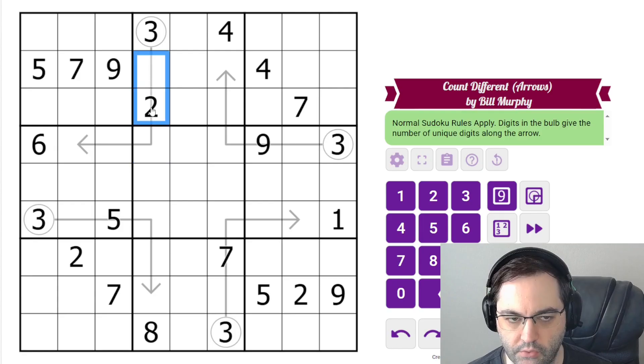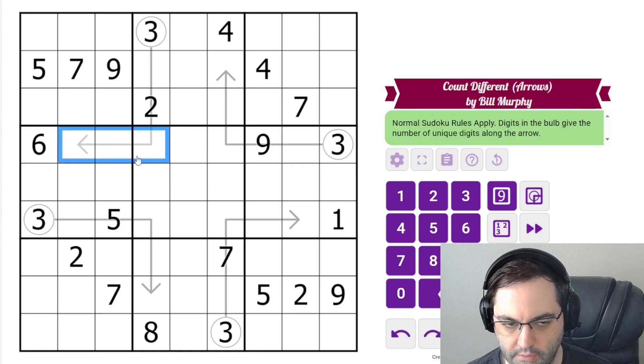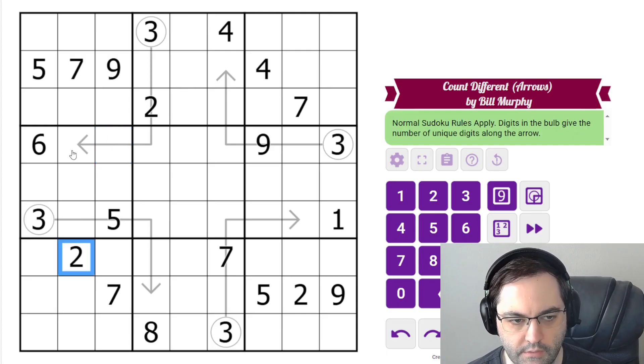So we can use that to place some digits immediately. We know there must be a two in these three cells because we have a given two. So there must also be a two in these three cells. Otherwise, we're going to have four distinct digits. And two can't go here or here, so it must go here.